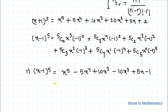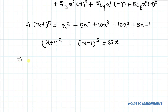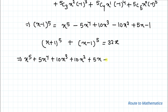Now let's substitute the expanded forms into the given equation (x+1)^5 + (x-1)^5 = 32x. We write: (x^5 + 5x^4 + 10x^3 + 10x^2 + 5x + 1) + (x^5 - 5x^4 + 10x^3 - 10x^2 + 5x - 1) = 32x.